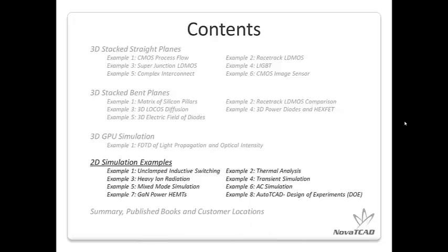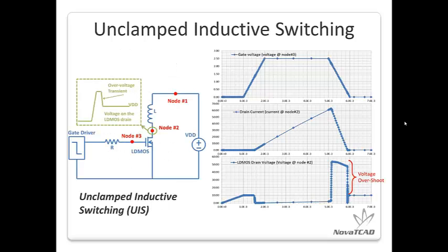Next, let's look at some 2D simulation samples. The first is unclamped inductive switching. With an inductive load, the current from the inductor cannot drop quickly when switching off the DMOS. A voltage overshoot is observed when switching off, and can be simulated by TCAD with a transient simulation.